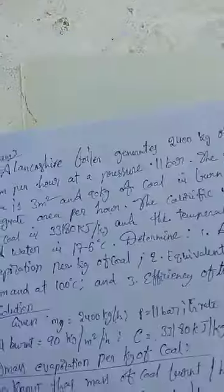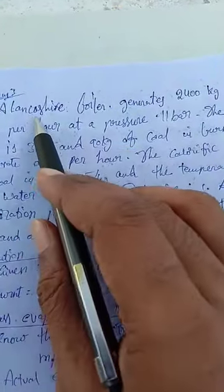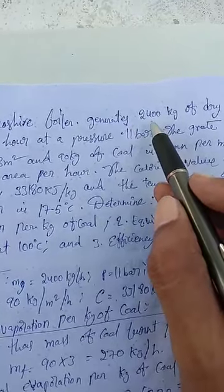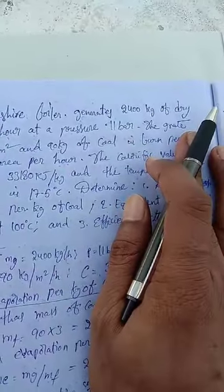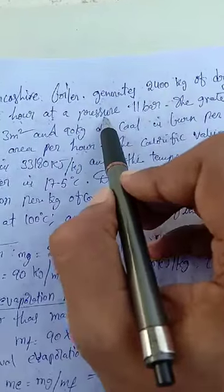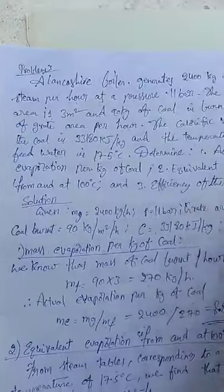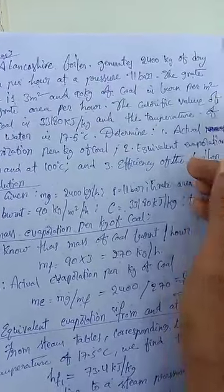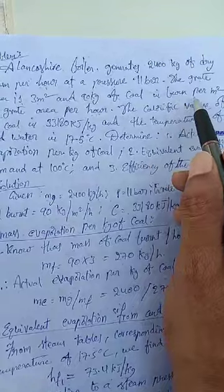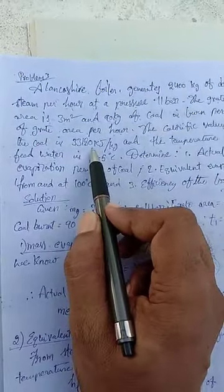Now we go to another problem. A Lancashire boiler — which is one type of boiler — generates 2400 kg of dry steam MS per hour, at a pressure of 11 bar. The grit area is 3 square metres, and 90 kg of coal is burned per square metre of grit area per hour. The calorific value of the coal is 33180 kilojoules per kg.